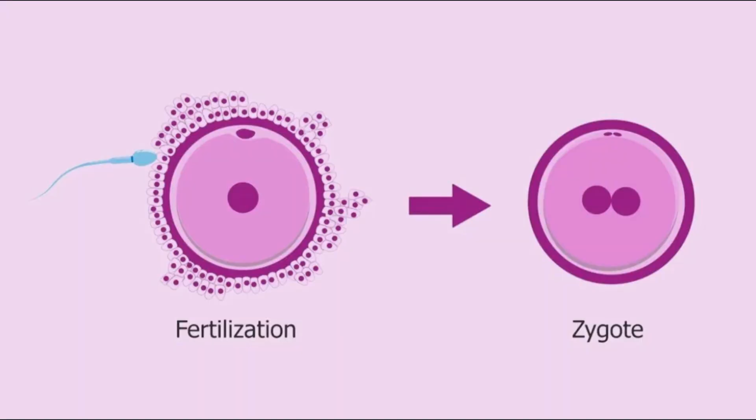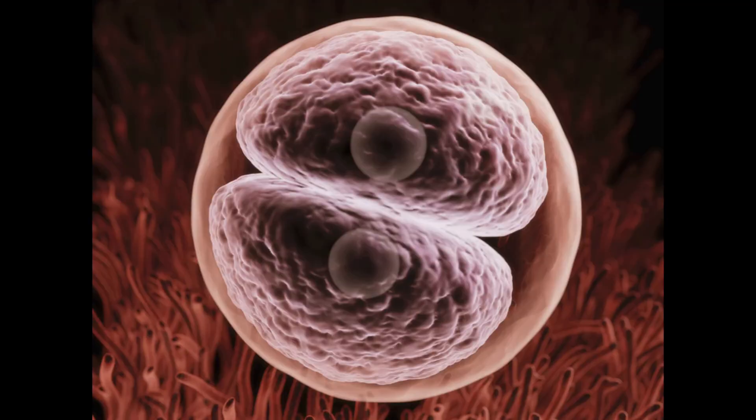During the first 24 hours after fertilization, the zygote begins to divide, forming a two-cell embryo.